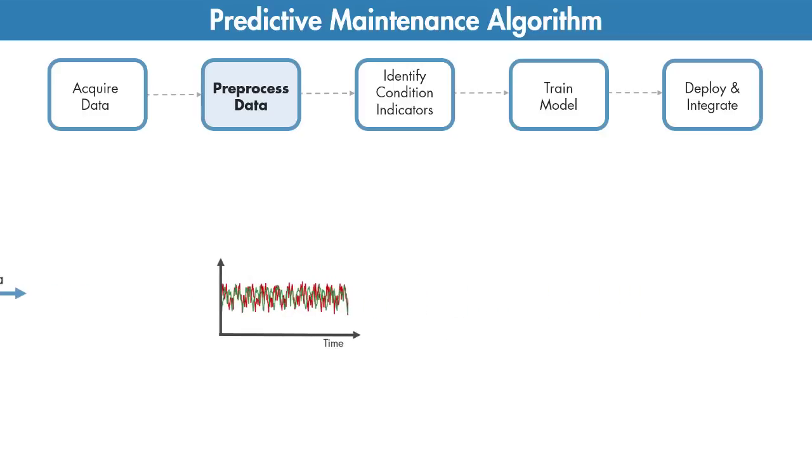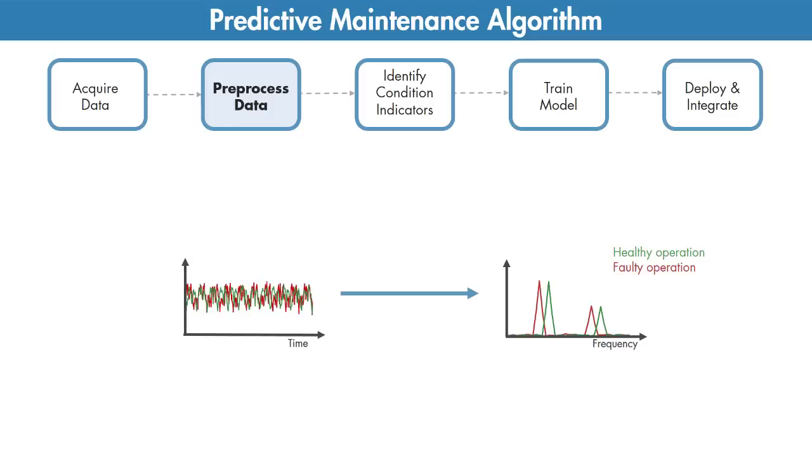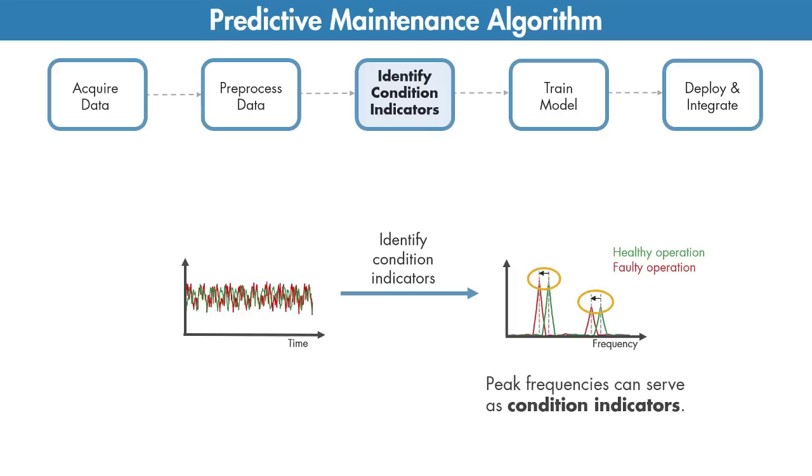For example, converting time domain data to frequency domain may help us extract some useful features, also referred to as condition indicators. These are used to distinguish healthy from faulty condition. In the plot, we see that the peaks in the frequency data shift left as the pump degrades, and therefore the peak frequencies can serve as condition indicators.